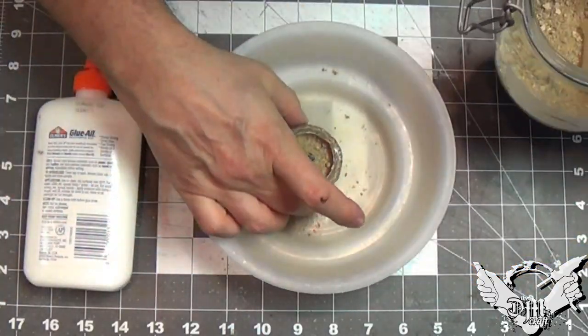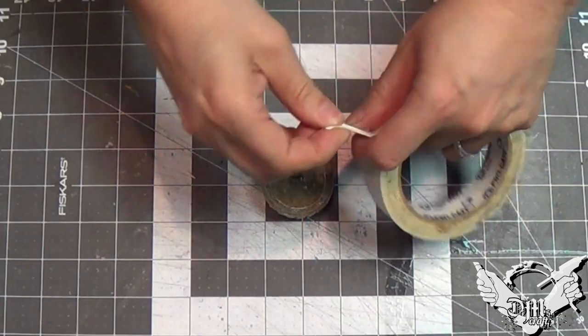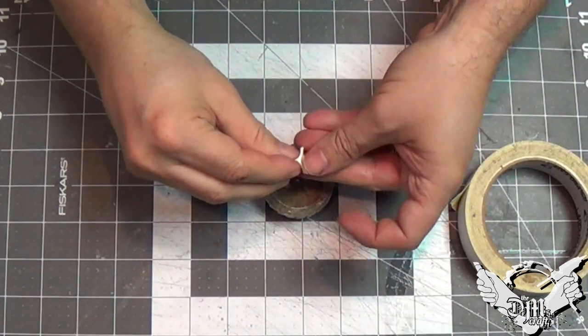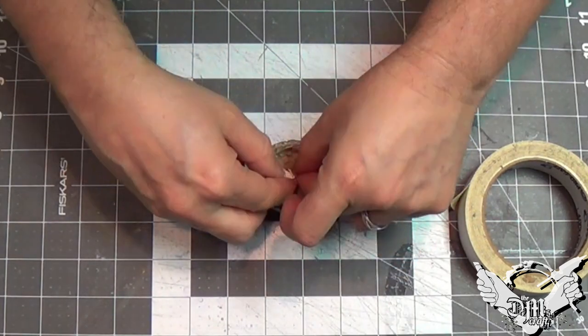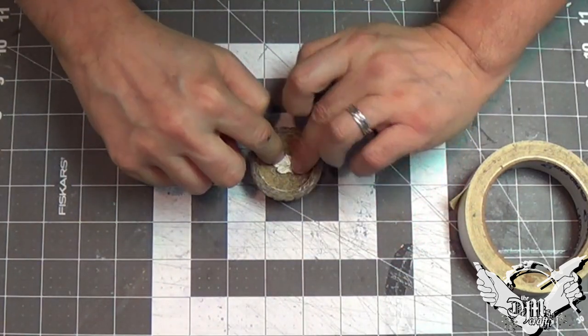Now, I'm going to put some construction sand in there, let that dry. Now, if that dried, I'm going to cover up the light itself. Just some masking tape. Because, I'm going to spray paint this flat black.